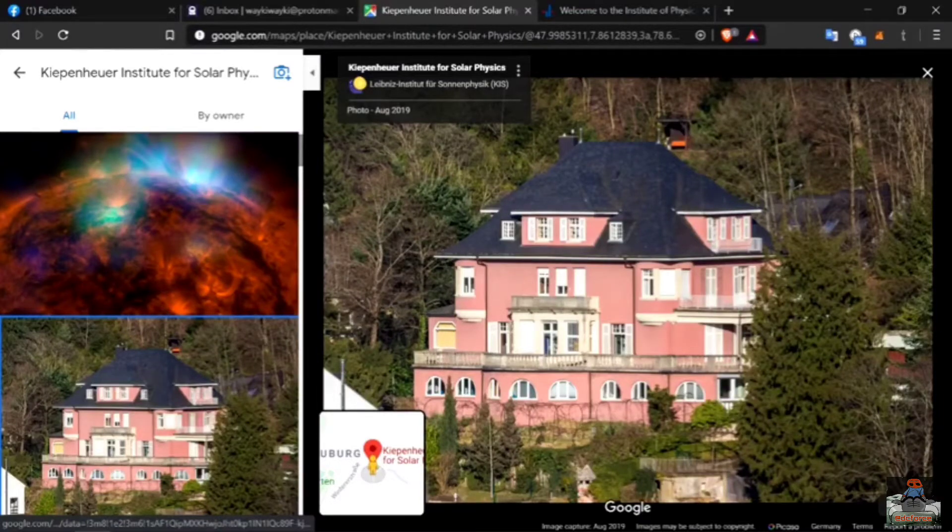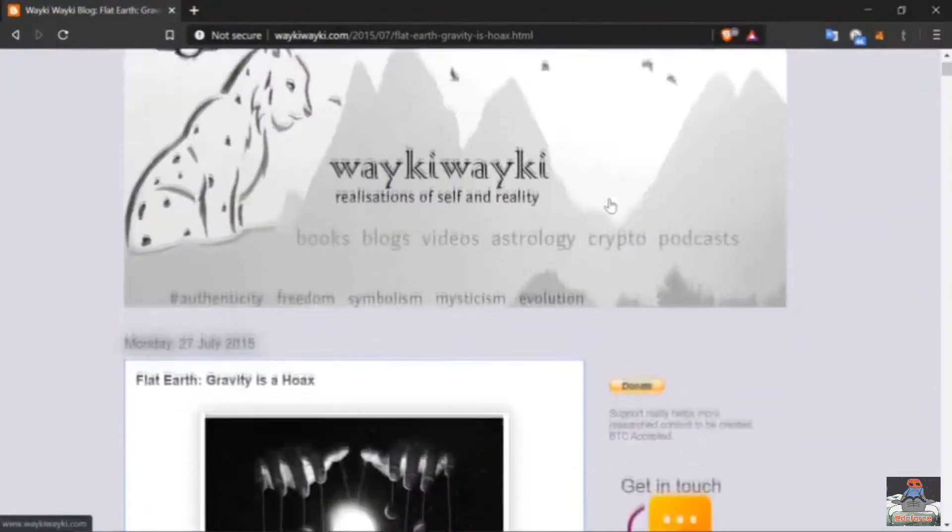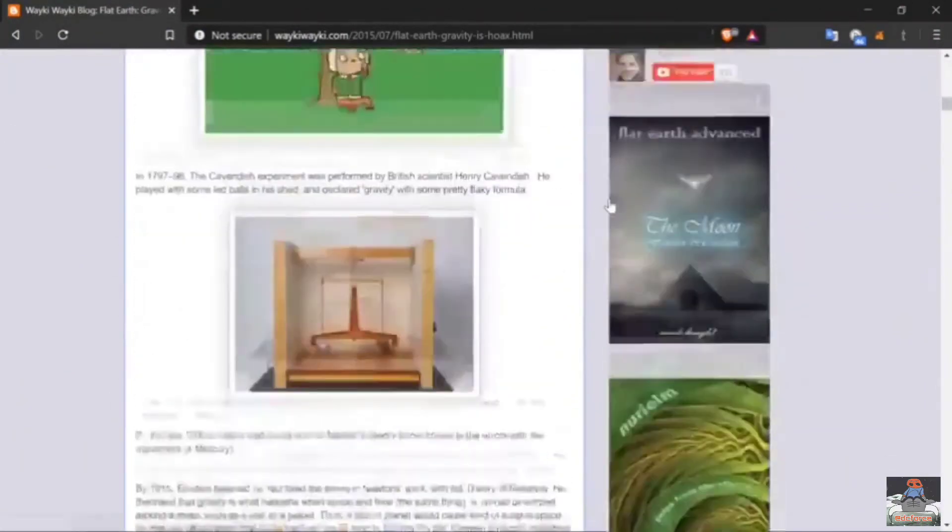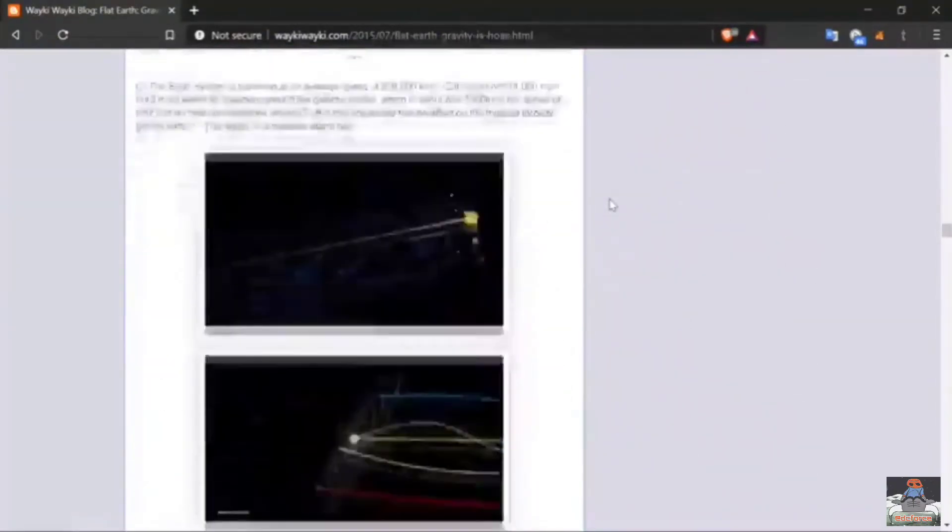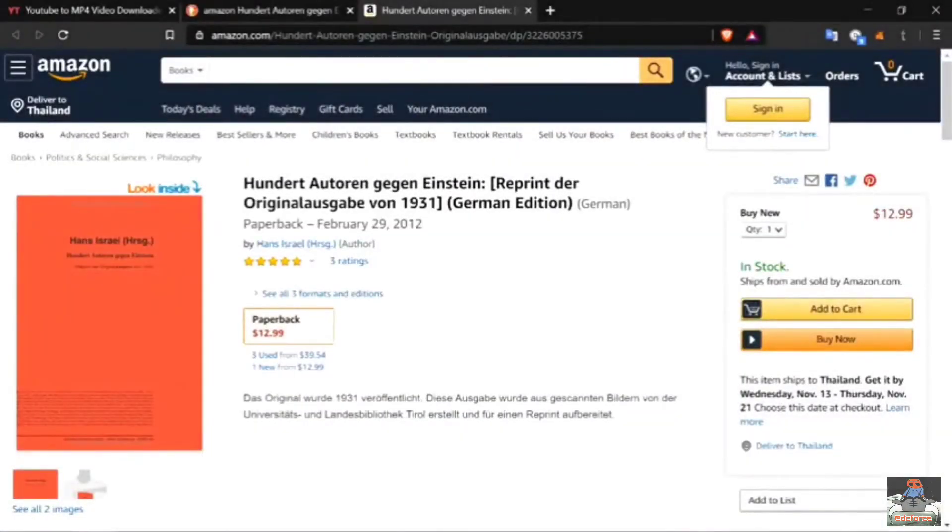Now before we get into the interview, for those new to the channel, know that gravity is just a theory. And my blog in 2015 explained the errors with gravity, and that it can be explained away by density and buoyancy. This blog had over 50,000 views, with not one person debunking it. Also worth knowing is that in 1931, a book called 100 Authors Against Einstein was published in German. This shows 100 scientists stating Einstein was leading science into pseudomysticism, abstraction, and speculation. It was crushed by mainstream science.